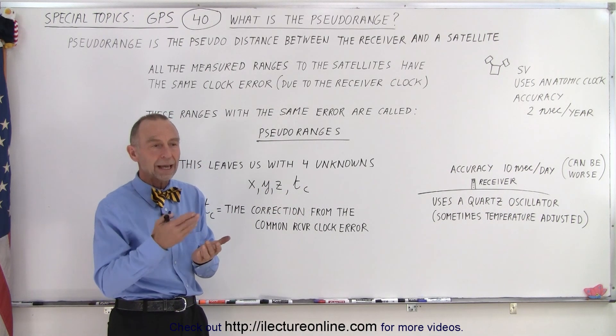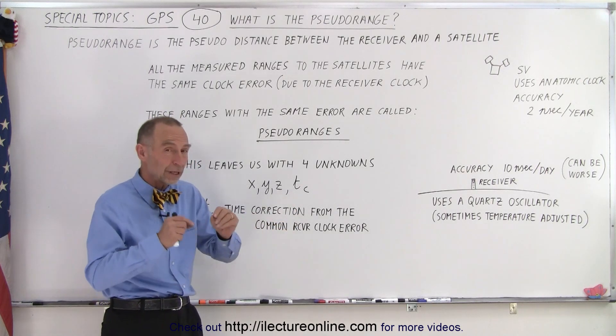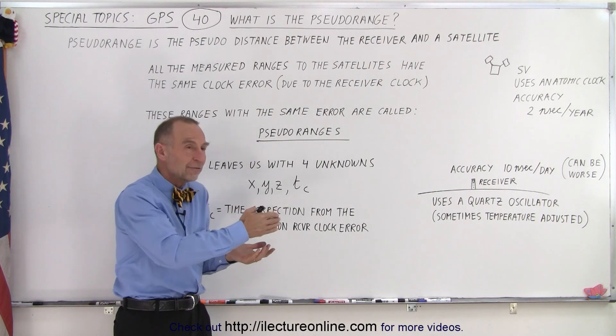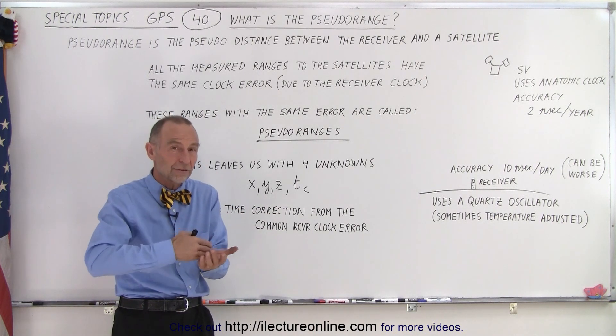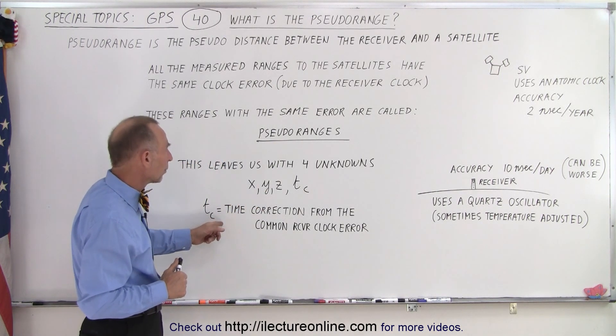So if we assume that we know the error, or if we assume that we don't know the error, we can then look for the error. But we can assume most likely that the error will be the same for every range measurement between the receiver and any one of the satellites.